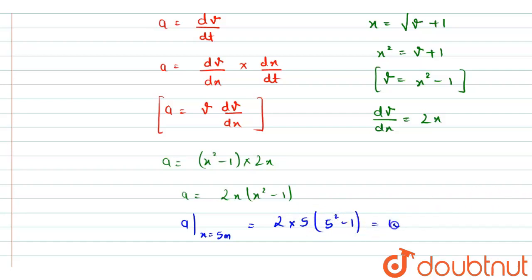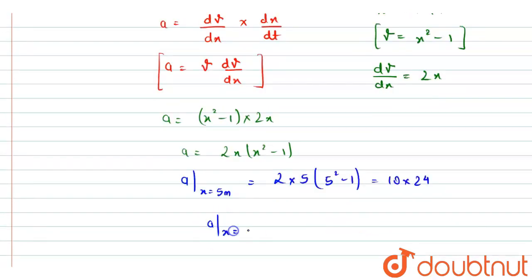So this will be 10 times 24. So acceleration at x equals to 5 meters is found to be equal to 240 units.